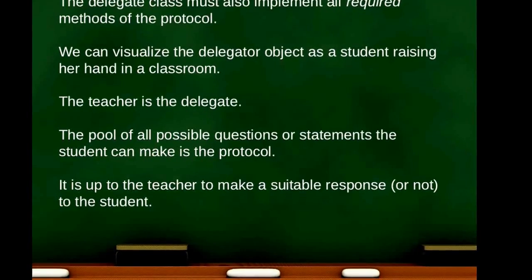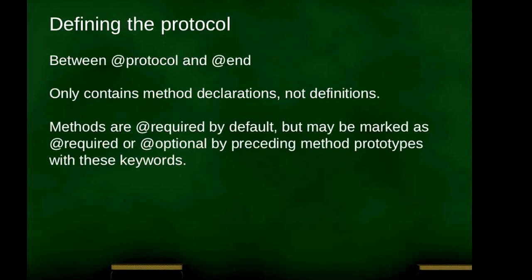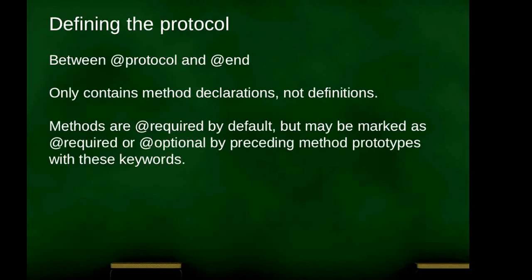So what does a protocol look like? We define a protocol between a pair of @protocol and @end directives. The protocol will only contain method declarations, not definitions. In iOS 5, a protocol can also contain properties, but we'll get to that later. The methods of a protocol are required by default — if you list methods without using the keywords 'required' or 'optional' they'll all be required. They may be marked with @required or @optional by preceding method prototypes with either keyword.